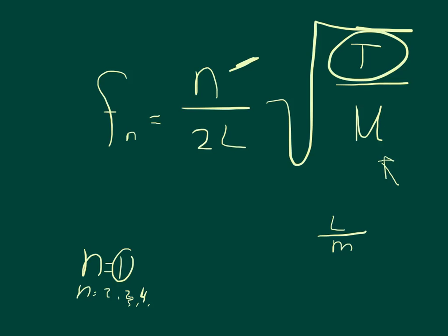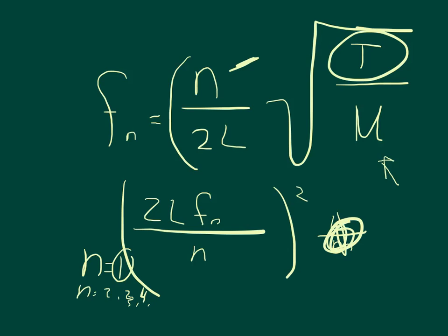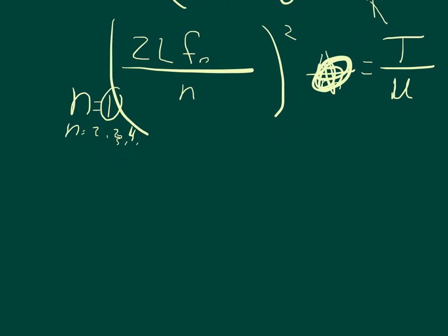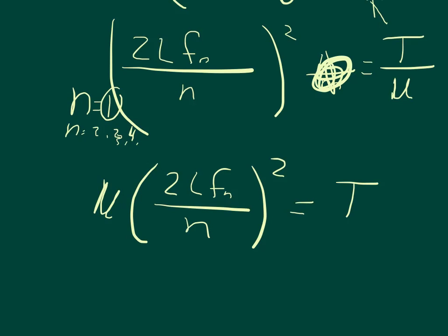So what we want to solve here is what tension do we want to put this thing at. In order to do that, we can multiply by the inverse of this on both sides, and what we'll get is 2L times the frequency divided by n, so divided by 1. Then we can square this quantity, and we'll just mark that out, and that will equal T over the linear density. Then we can multiply both sides by the linear density, and what we'll get is that the linear density times 2 times L times the frequency over n squared equals T. So we've solved for T.